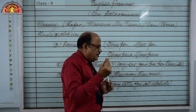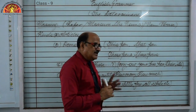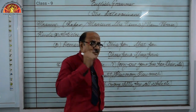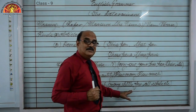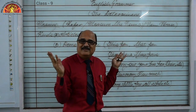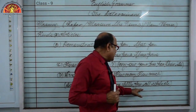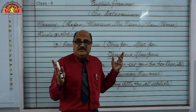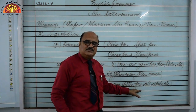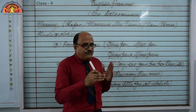'Little' is used to express uncountable quantity: 'little milk was left for preparing tea' — meaning the quantity was not enough. 'A little milk' means a small but sufficient amount: 'I need a little milk to prepare one cup of tea.' 'The little' refers to a specific small amount: 'the little money he had, he squandered it all on gambling.' 'Few' is used for countables: 'he has few friends' means almost none.